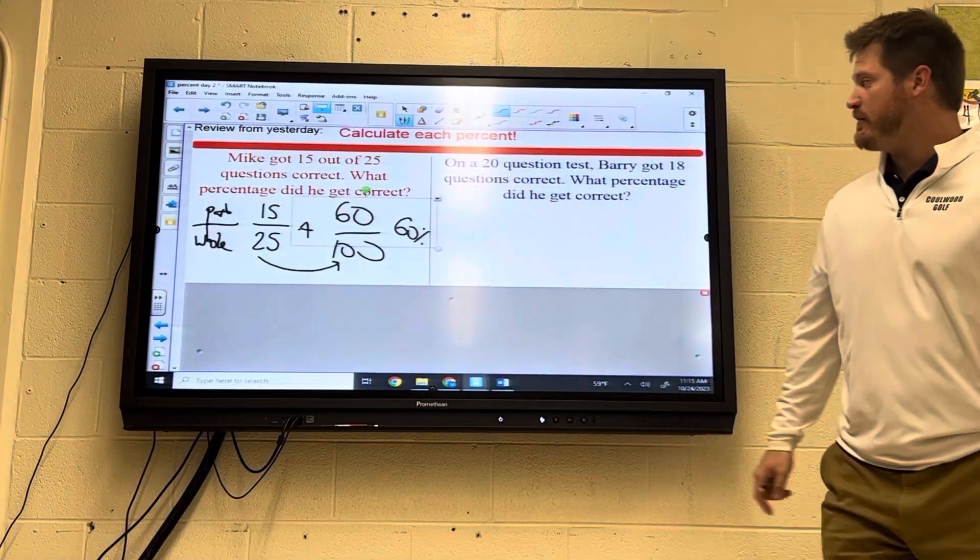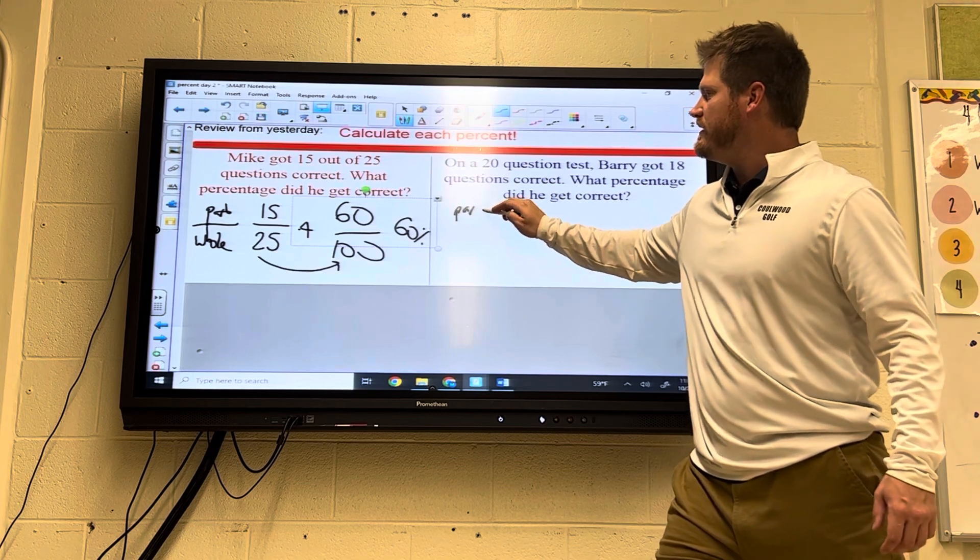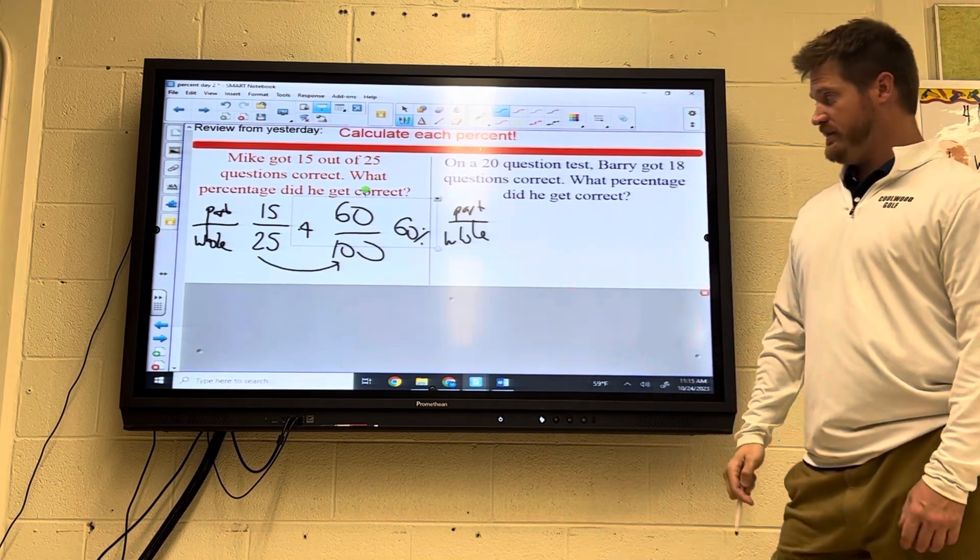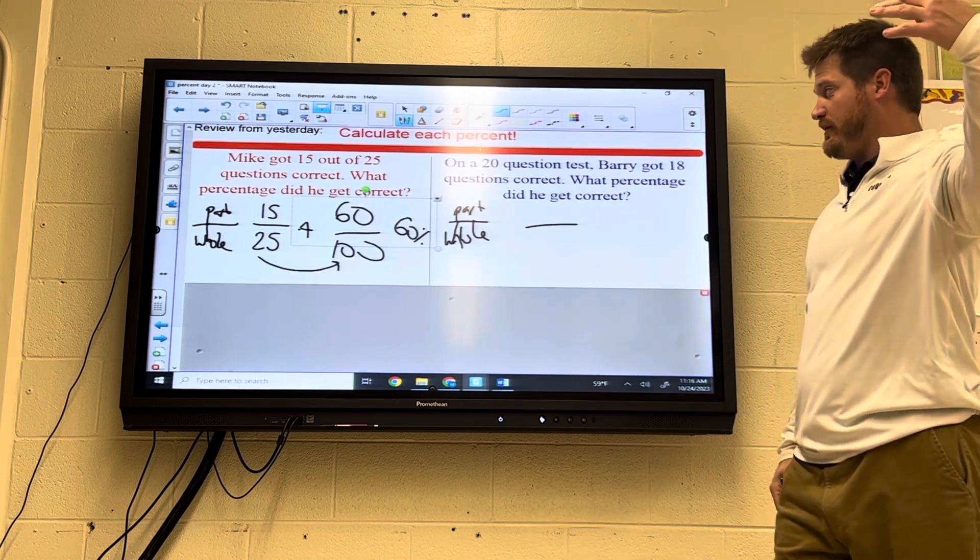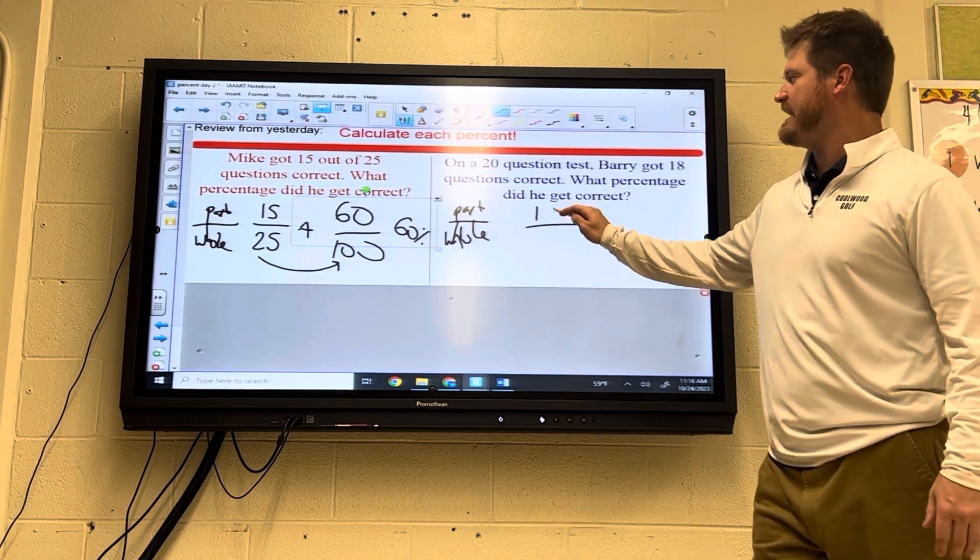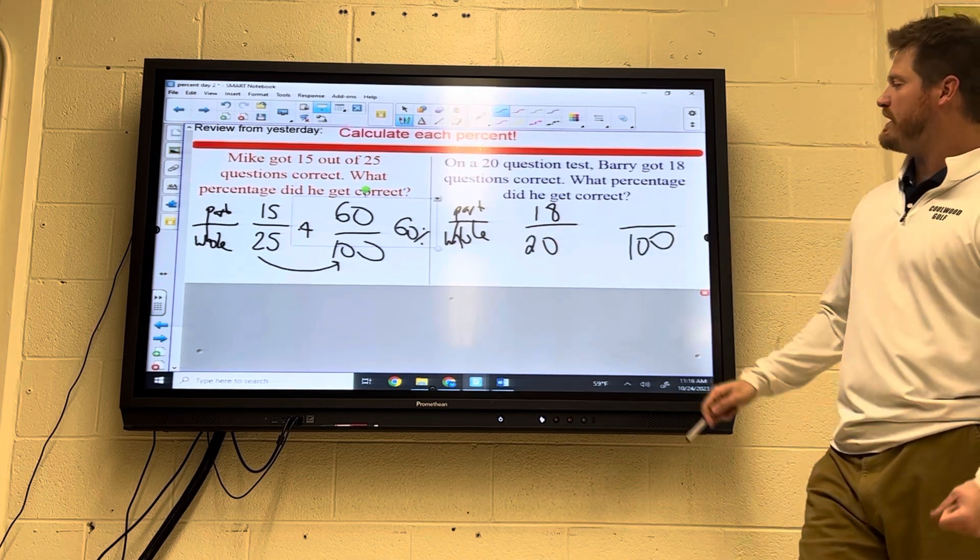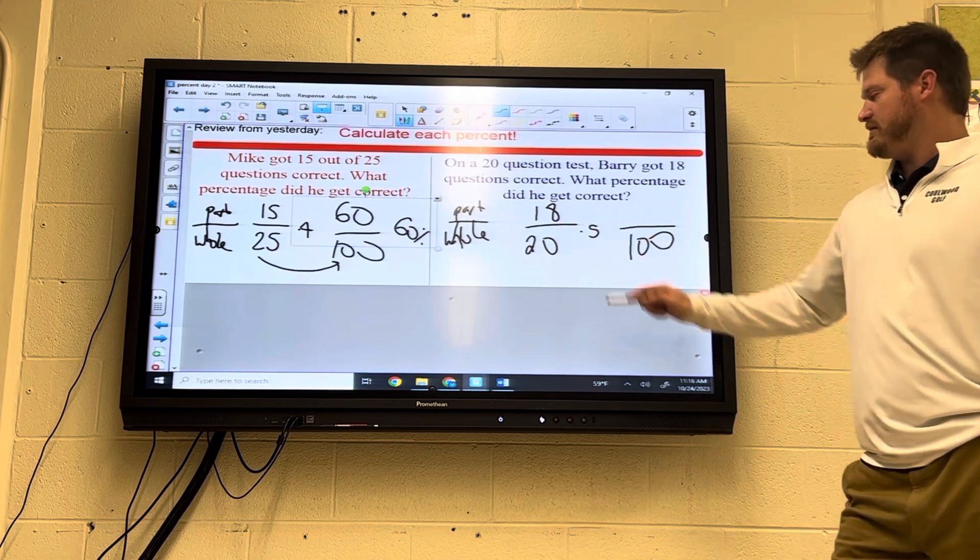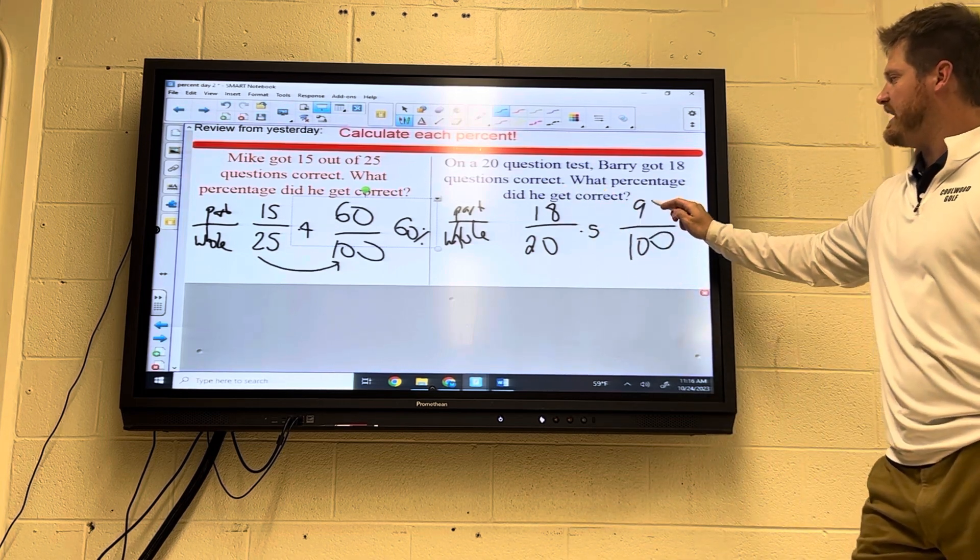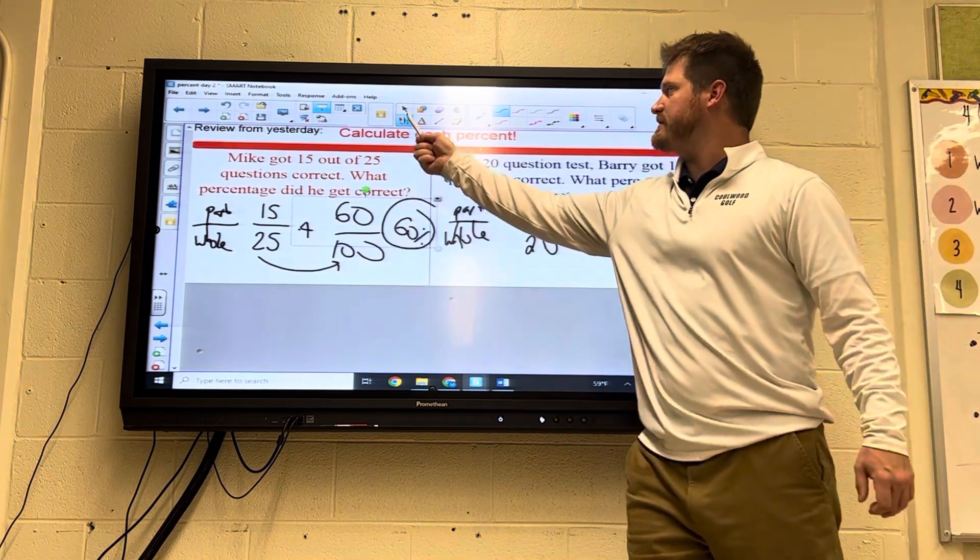Now the next one, a common mistake would be to put 20 over 18. That doesn't make sense because it's part over whole. The total amount is on the bottom. You cannot get 20 correct out of 18 questions. You can get 18 correct out of 20, though. Percents out of 100, 20 goes into 100 five times. So times 5, times 5, 18 times 5 is 90. And 90 over 100 means 90%. Those are the two answers there.